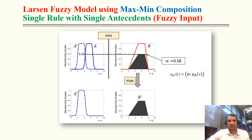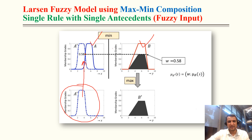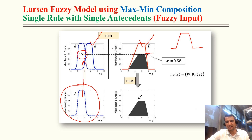The solid lines represent A and B, which are known. For input A-dash, we superimpose it and find the degree of compatibility equals 0.5. In Mamdani we slice at this level, but in Larsen we do not slice — we scale down the output B to this level of 0.5.